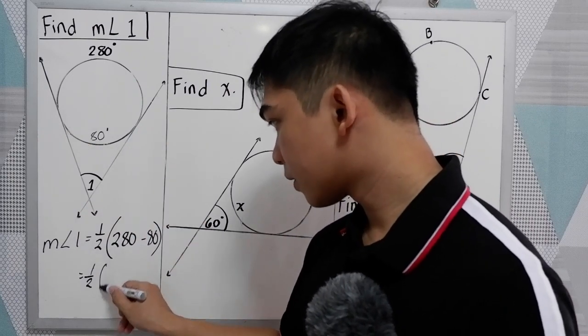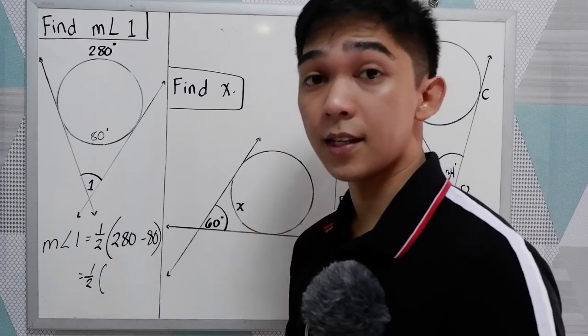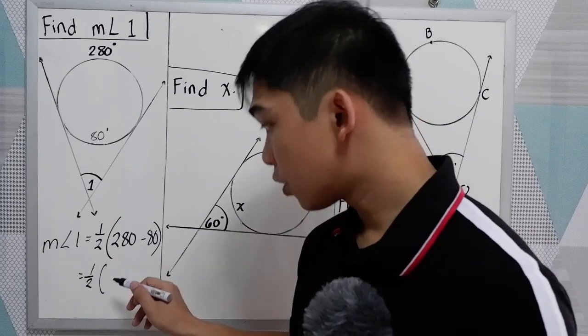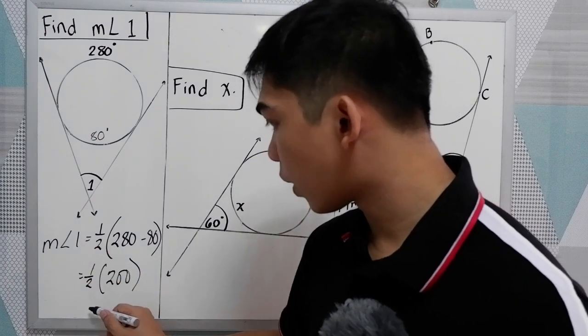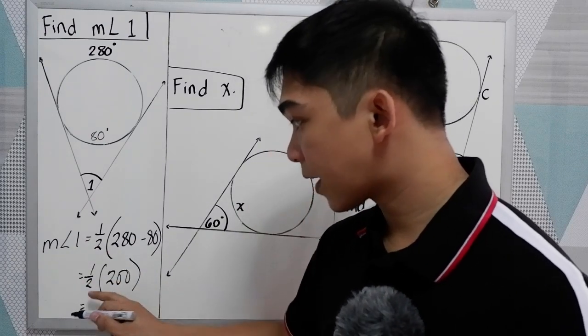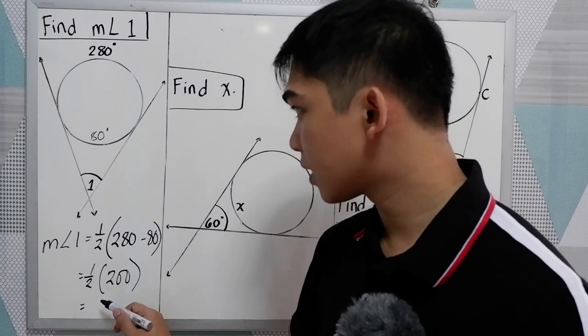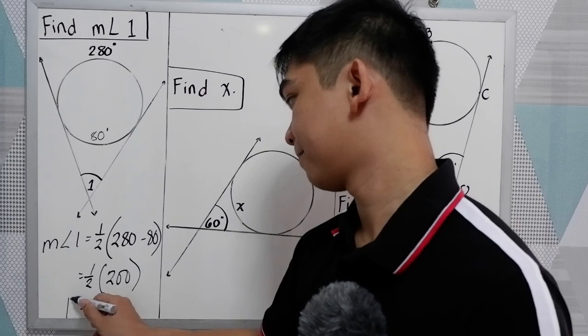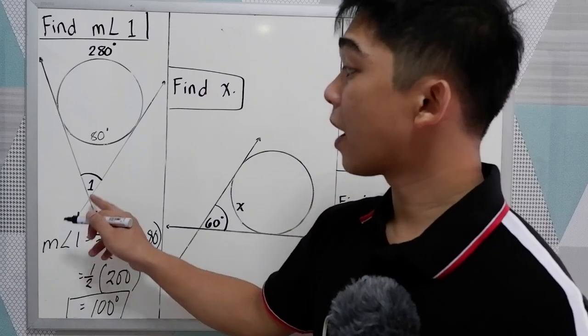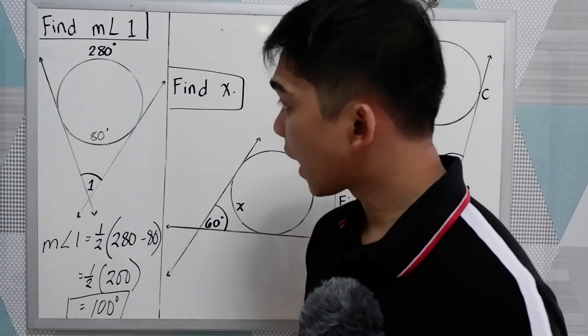So one-half, 280 minus 80, that is 200. Now, to get the measure of angle 1, 200 divided by 2, so this is 100 degrees. The measure of angle 1 is 100 degrees.